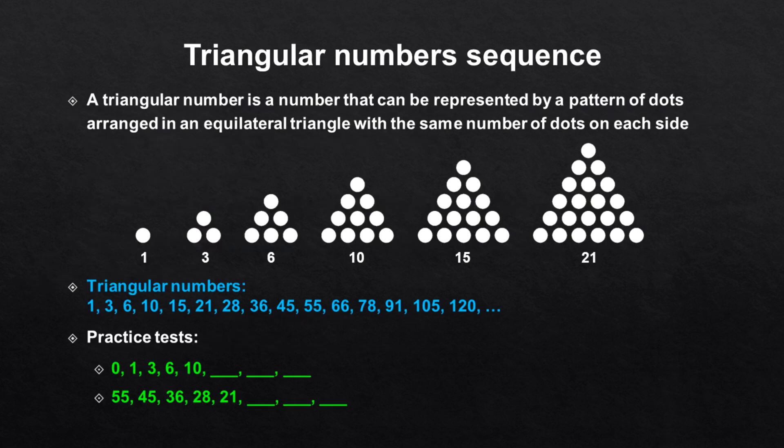Triangular number sequence. A triangular number is a number that can be represented by a pattern of dots arranged in an equilateral triangle with the same number of dots on each side. Here you can see a list with the first triangular numbers. Number series tests with triangular numbers could look like these practice tests.